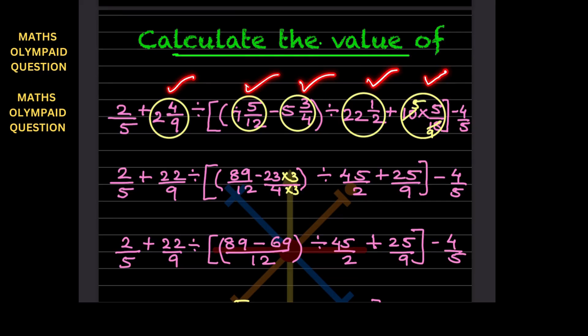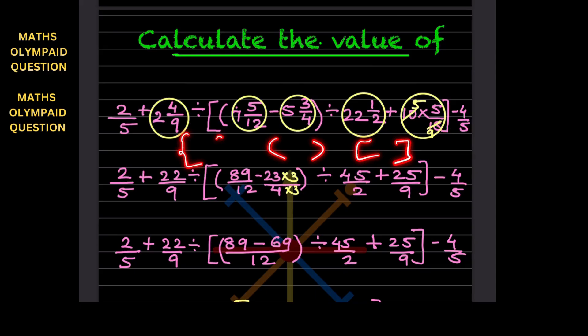After handling the mixed fractions, we'll think about the brackets. If there is no mixed fraction, we always solve the round brackets first, then the square brackets, then the curly brackets. Just to clarify: round brackets look like this, square brackets look like this, and curly brackets look like this. I'll show you step by step.